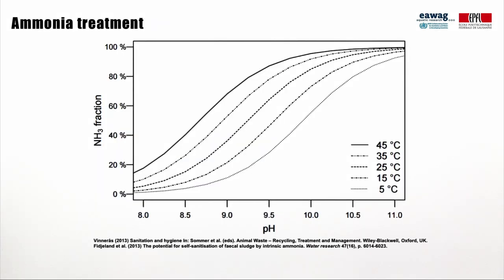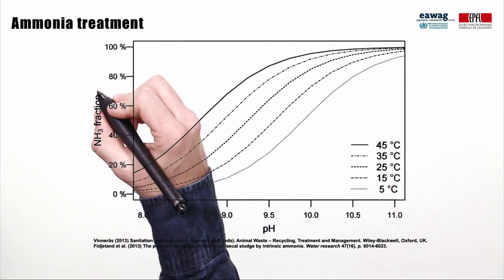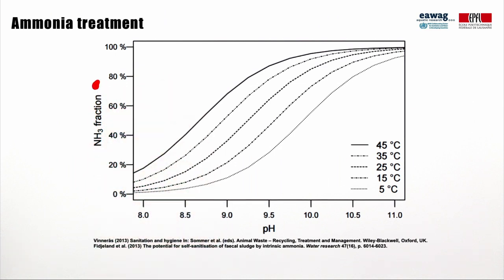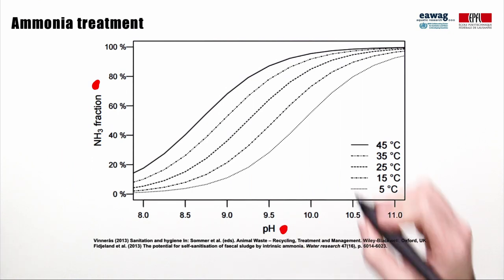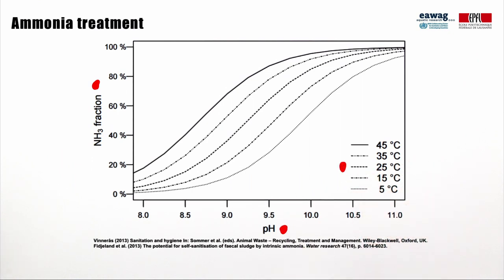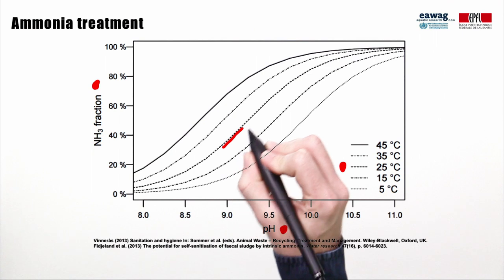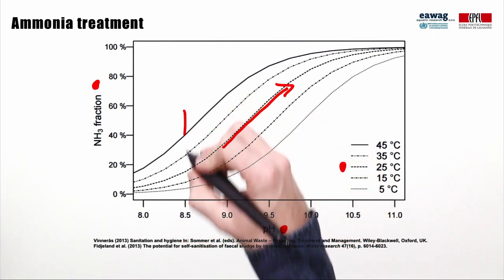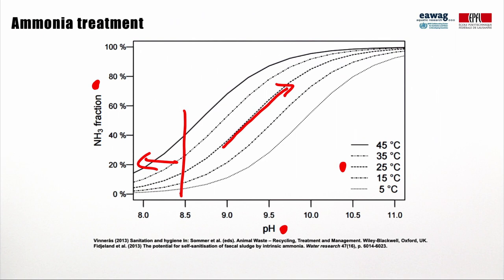Ammonium-nitrogen and ammonia-nitrogen are in equilibrium with each other. This graph shows the fraction of nitrogen available as ammonia as a function of pH and temperature. By increasing the pH — for example, by the addition of lime or ash — the ammonia-nitrogen concentration can be increased. At a pH below 8.5, a mixture of urine and feces will still have a low ammonia concentration for pathogen inactivation. At this pH, most of the nitrogen is in the form of ammonium, which is not harmful to pathogens.